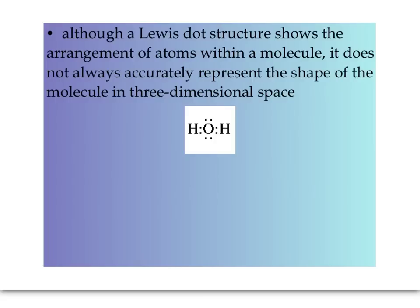A Lewis dot structure shows the arrangement of atoms within a molecule, but we're not really getting an idea of how they're arranged in three-dimensional space. This Lewis dot structure makes it look like the atoms within the water molecule are all within a line, but in reality, they are not.